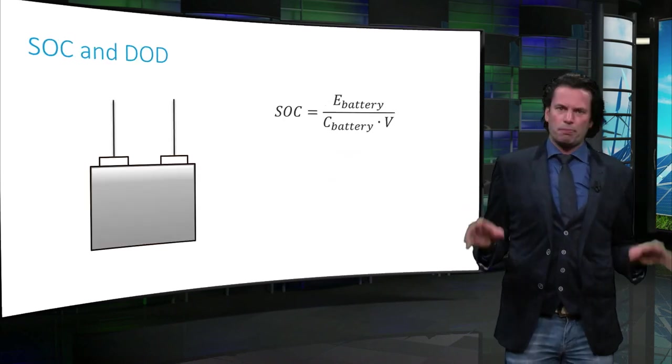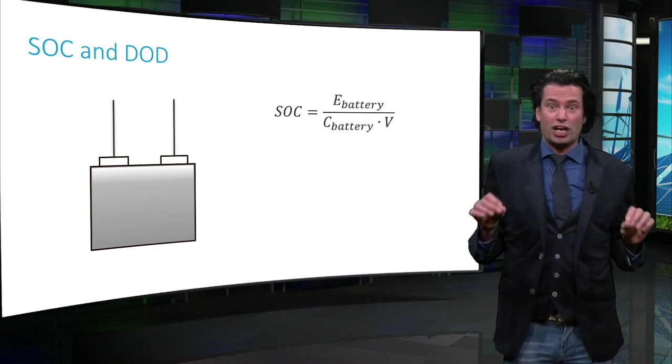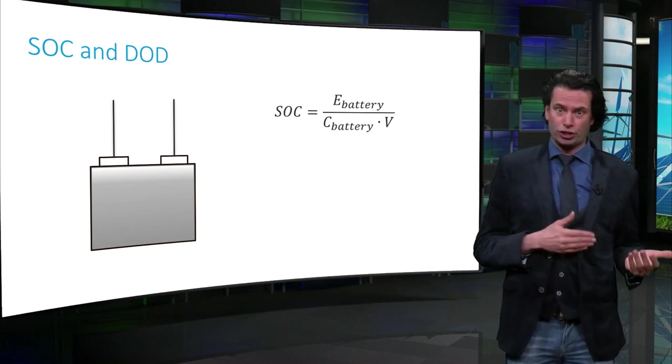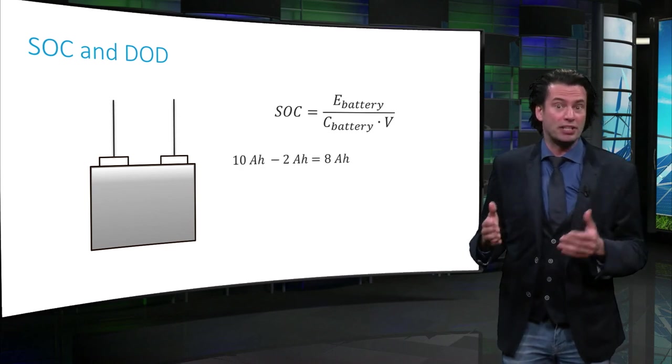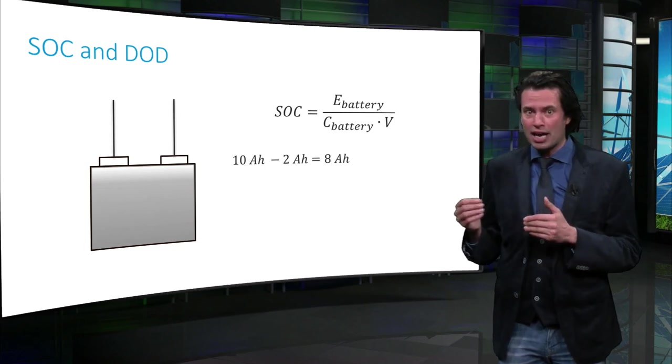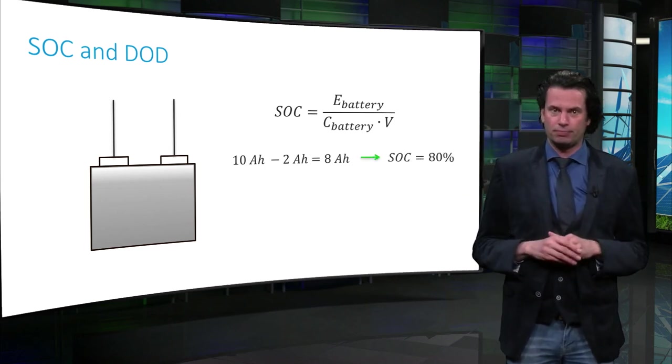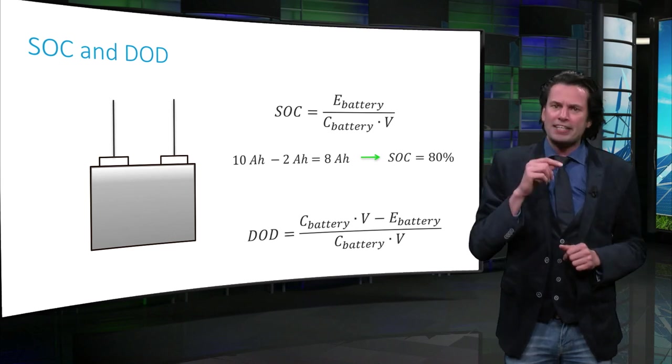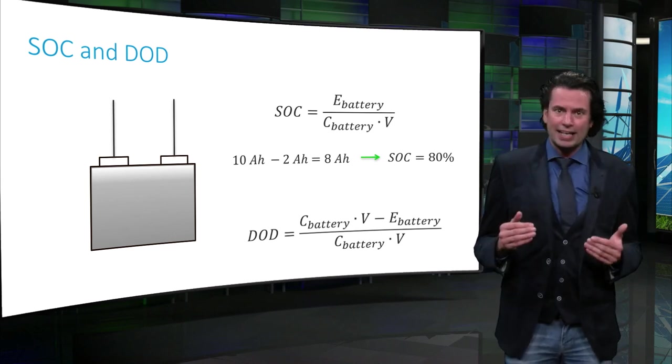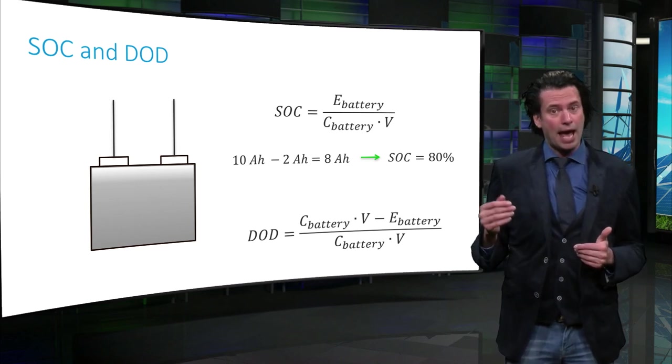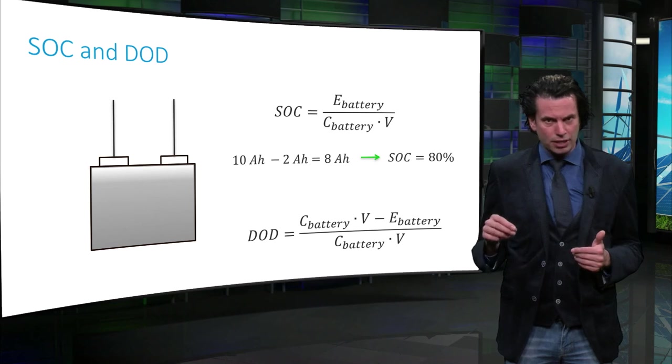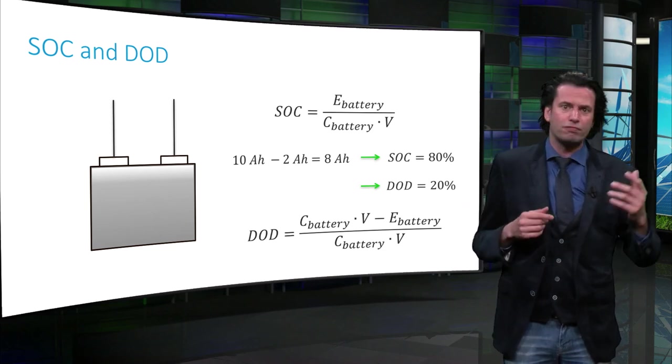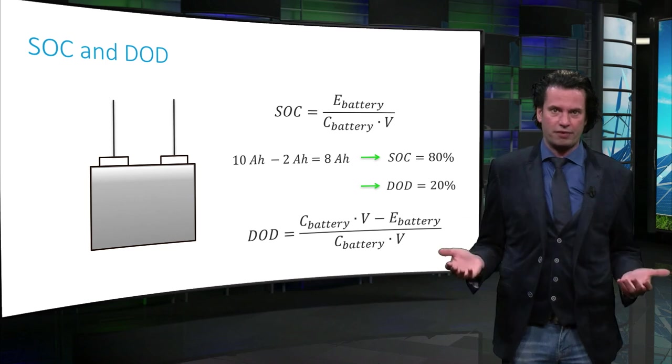Now let's look at another important battery parameter, the state of charge or the SOC. This is defined as the percentage of the battery capacity available for discharge. Thus a 10Ah rated battery that has been drained by 2Ah has a state of charge of 80%. Then we also have the depth of discharge or DOD. Depth of discharge is defined as the percentage of the battery capacity that has been discharged. For example, the same 10Ah battery that has been drained by 2Ah has a depth of discharge of 20%. Thus the depth of discharge and the state of charge can be seen as complementary to each other.